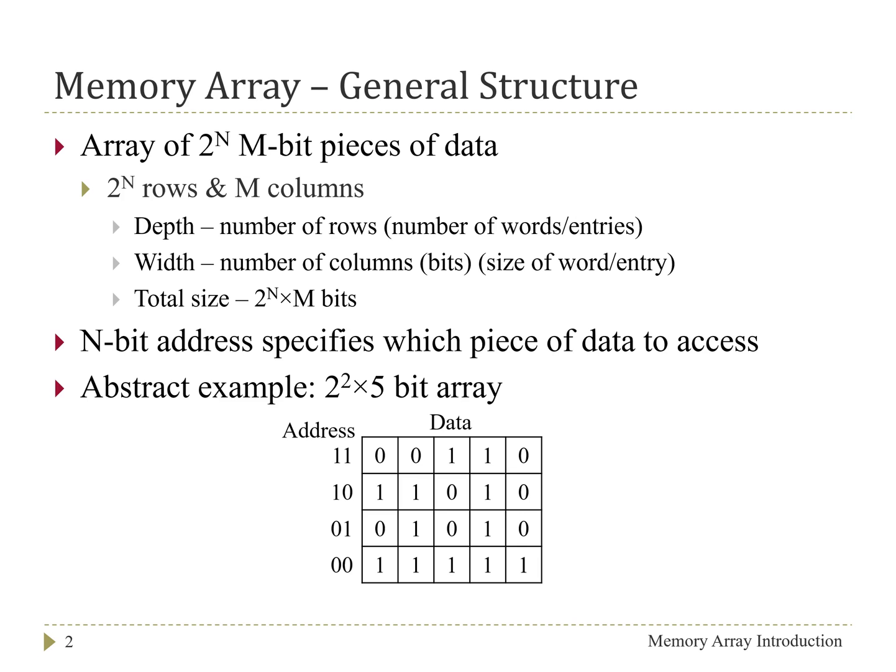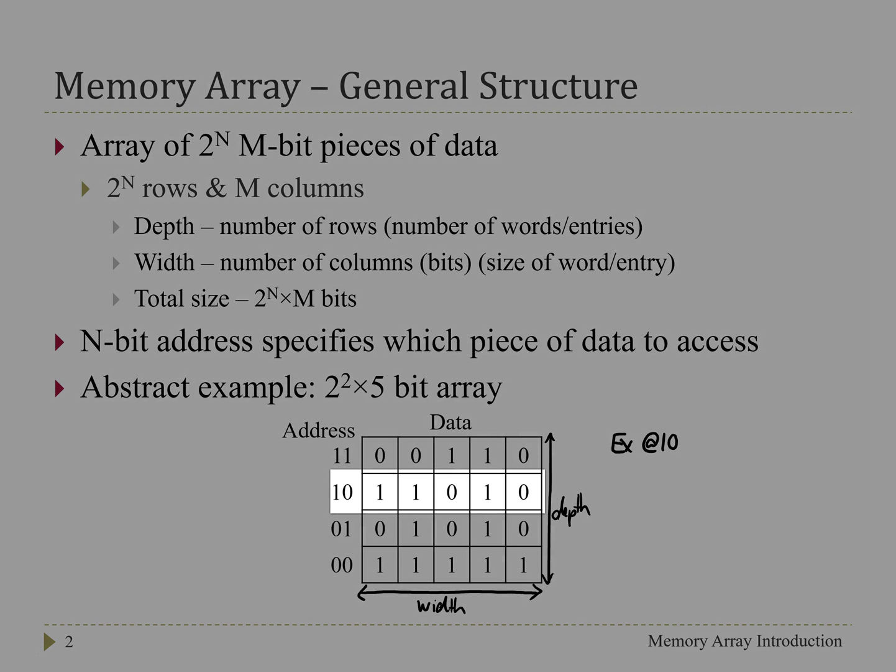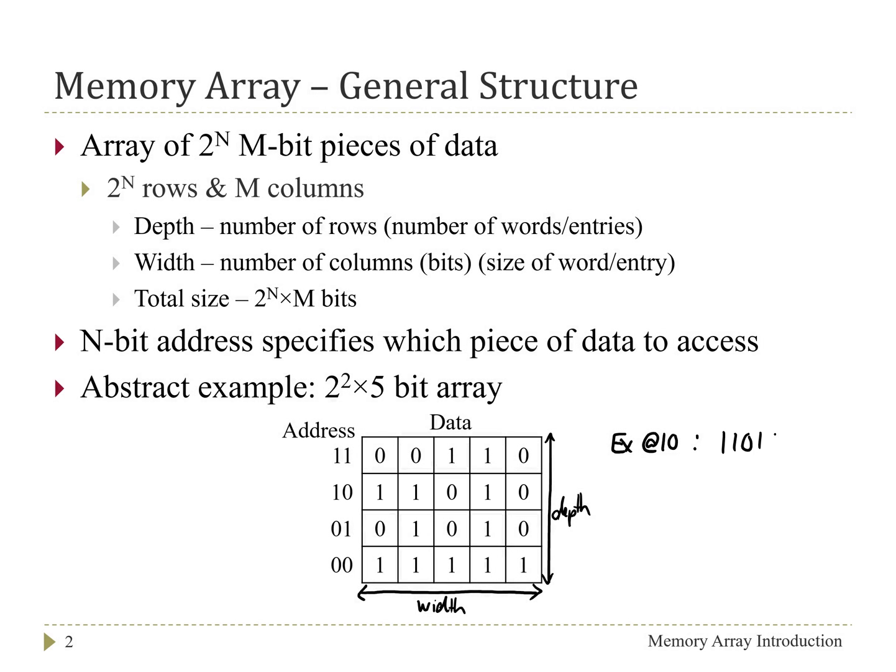And so going back to some of our terminology, the width of the array is the number of columns in the array and the depth is the number of rows or the number of entries. As an example of accessing something, if we were to look at the address binary 1 0, we'd be looking at this address here and we could see that the data stored at this entry is 1 1 0 1 0. And so this is abstractly what a memory array looks like.